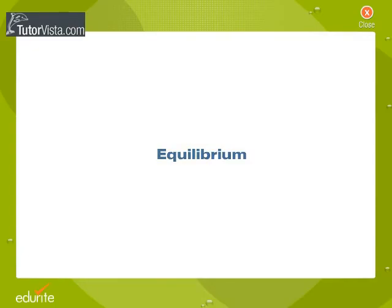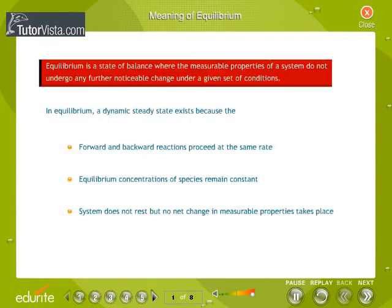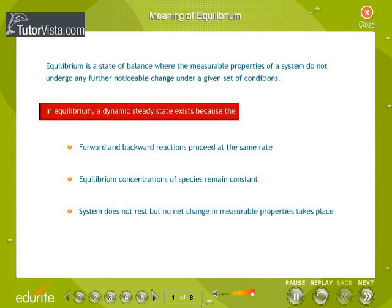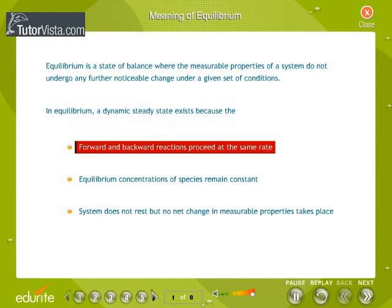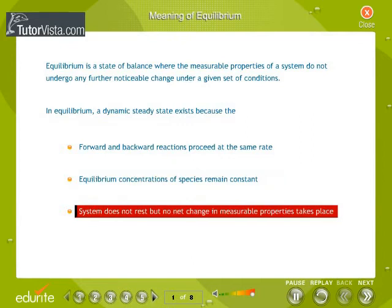Equilibrium is a state of balance where the measurable properties of a system do not undergo any further noticeable change under a given set of conditions. In equilibrium, a dynamic steady state exists because the forward and backward reactions proceed at the same rate, equilibrium concentrations of species remain constant, and the system does not rest but no net change in measurable properties takes place.